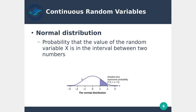We see normal distributions in many different areas — for example, heights are also normally distributed in a given population. So a lot of things you measure end up with a normal distribution. When we're calculating probability, imagine we want to know the probability of a given height: we choose a random person X, and we want to know what's the probability that their height will land within a particular area. That's what we're talking about with continuous random variables — measuring the probability that the value of X will be between two numbers.